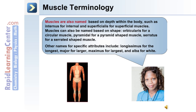Muscles are also named based on their depth within the body, such as internus for an internal muscle, and superficialis for a superficial muscle. Muscles can also be named based on shape: orbicularis for a circular muscle, pyramidal for a pyramid-shaped muscle, and serratus for a serrated-shaped muscle.